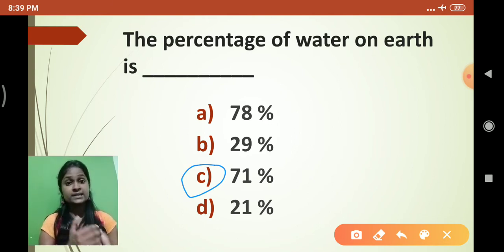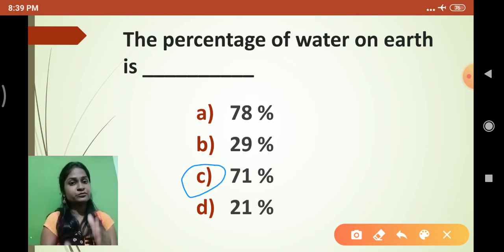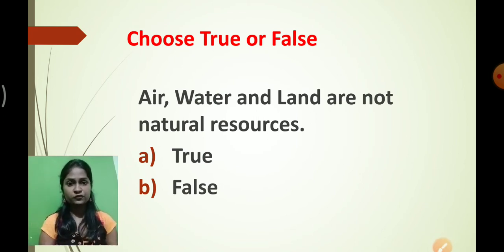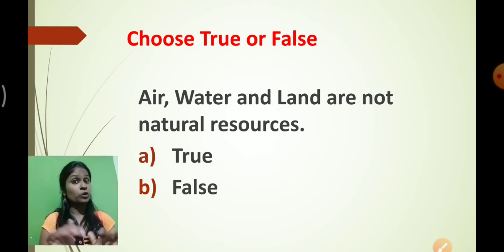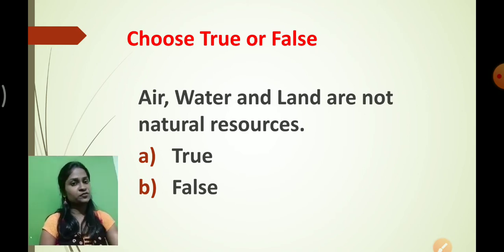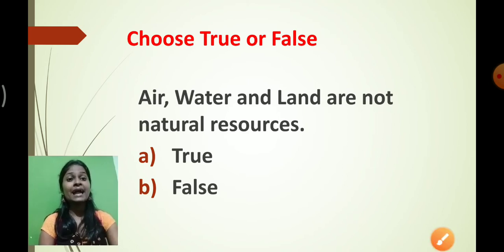This is the type of fill-in-the-blanks question that will be there in your exam. There will also be true or false type questions. You don't have to type anything - there will be options A and B. If you feel the statement is true, click true; if false, click false. For example: 'Air, water and land are not natural resources.'